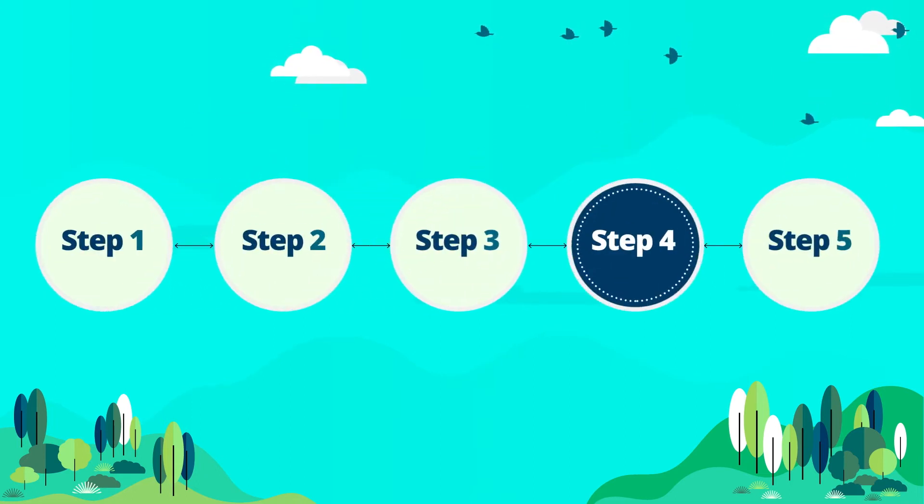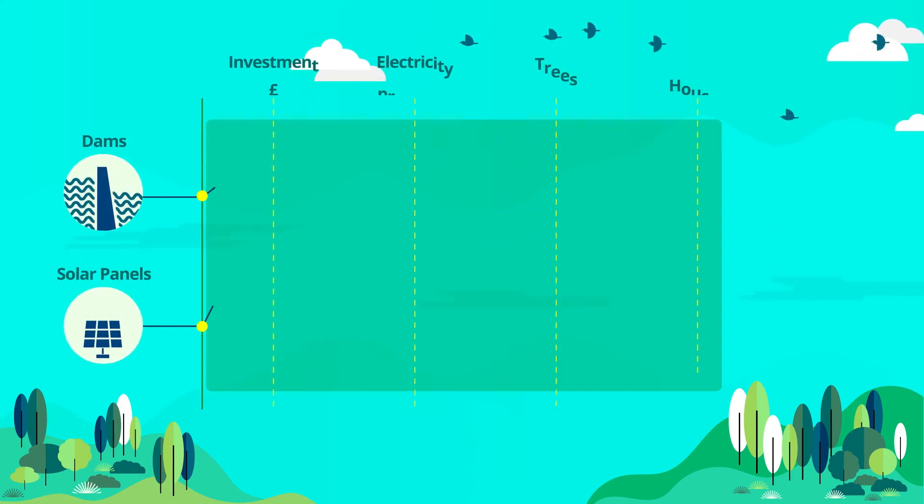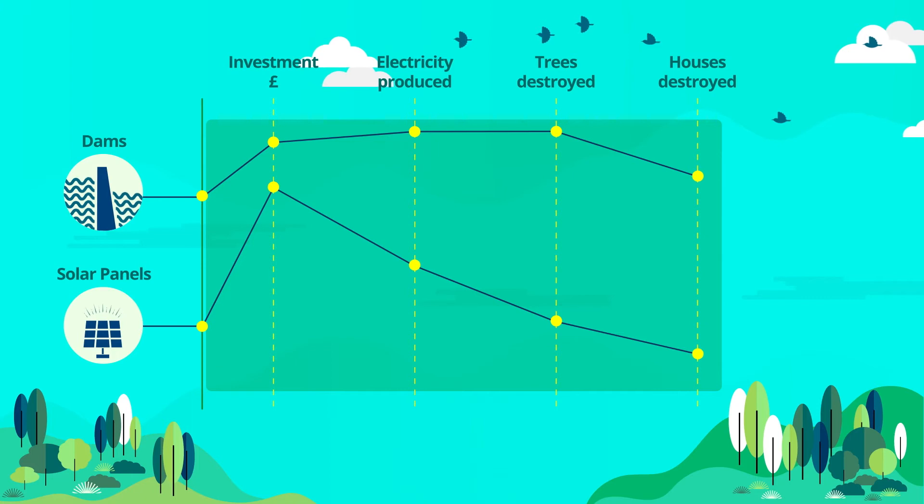Step 4 – Run an iterative modelling process with the stakeholders, assessing different identified options, along with their benefits and impacts.